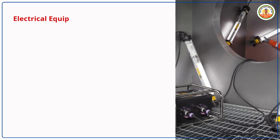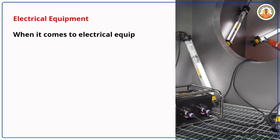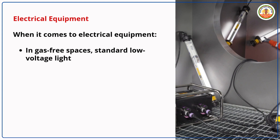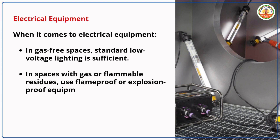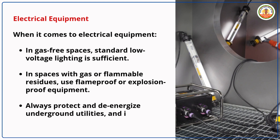Electrical equipment: In gas-free spaces, standard low-voltage lighting is sufficient. In spaces with gas or flammable residues, use flame-proof or explosion-proof equipment. Always protect and de-energize underground utilities and implement a lockout-tagout system.